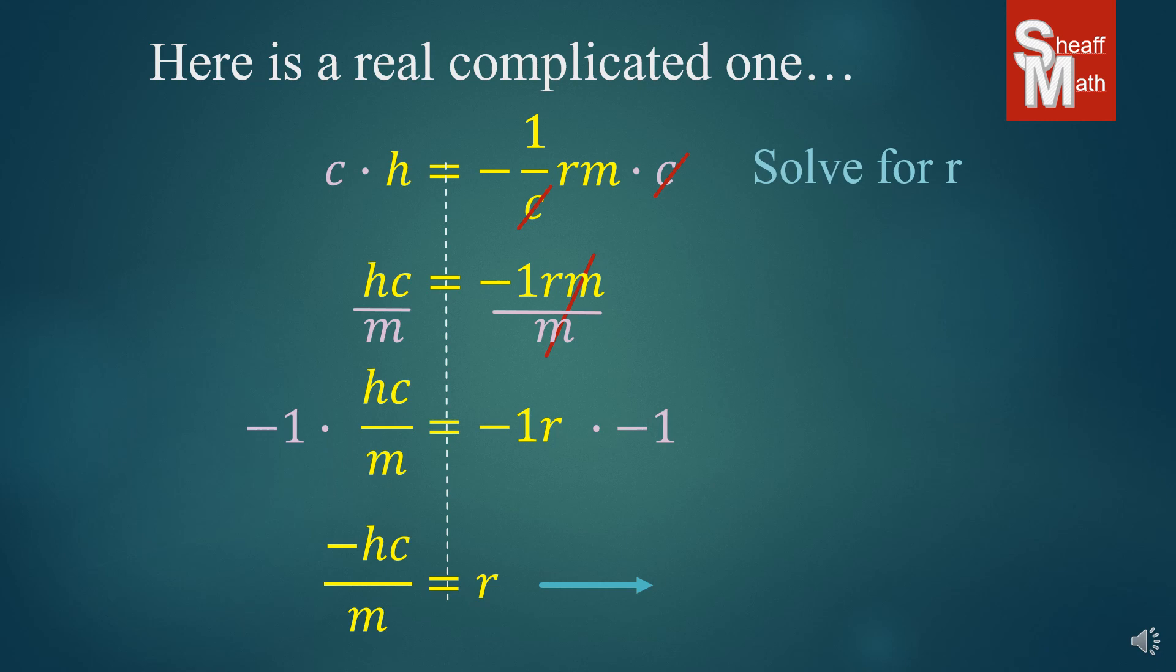And so we end up with negative HC over M equals R. And make sure that you put it in the right direction. You're solving for R, so have that first. And we get our answer.